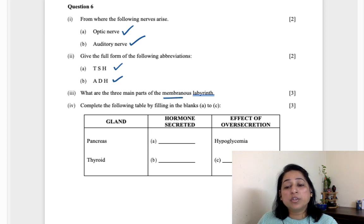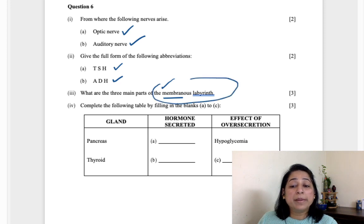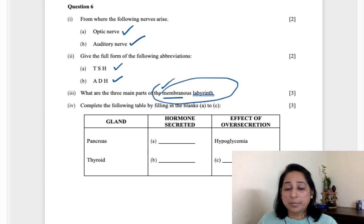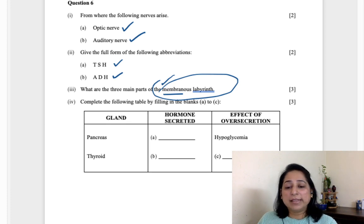What are the three main parts of membranous labyrinth? First you must know what is membranous labyrinth - it is a part of the ear. The three parts are cochlea, semicircular canals and vestibule. In your ICSE board papers they have given you to draw the diagram of membranous labyrinth. In your book there is a diagram given in nervous, in sense organs, ear. There is a diagram given that is the diagram of membranous labyrinth - please learn that diagram, it's very important. Complete the following table: pancreas hormone secreted insulin because it is hyperglycemia/hypoglycemia given here, so it would be insulin here. Thyroid secretes thyroxine.